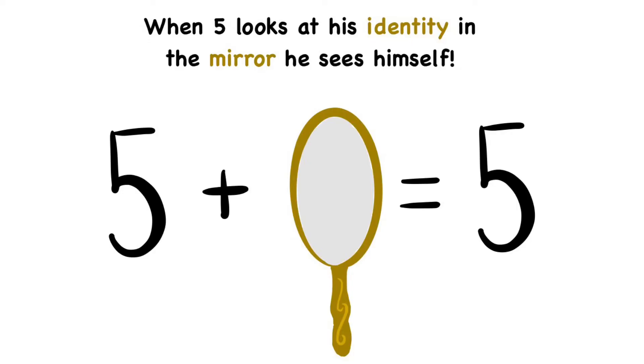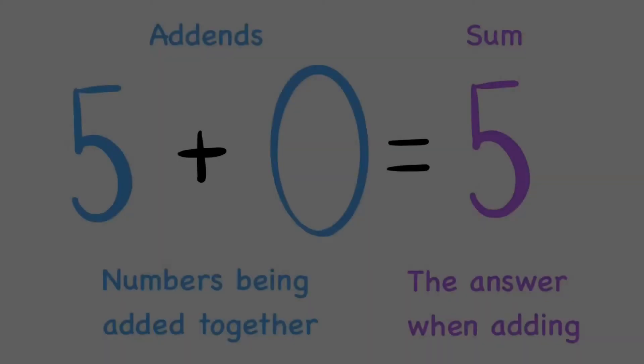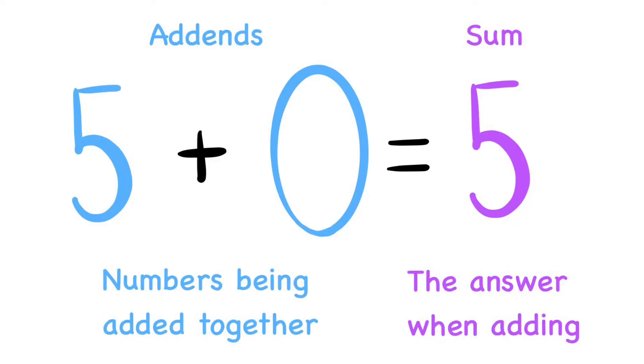So we know that 5 plus 0 is 5. Now, a quick reminder before we keep going. Remember, the addends are the numbers being added together, 5 and 0, and the sum is the answer when you add, which is 5 because 5 plus 0 equals 5.